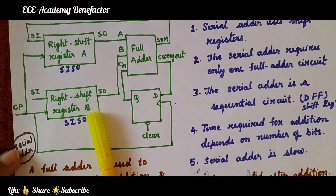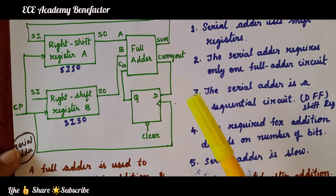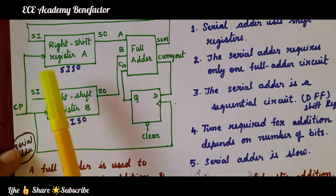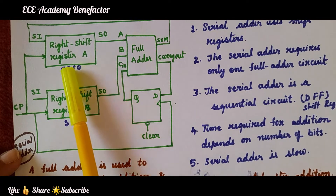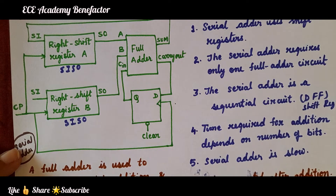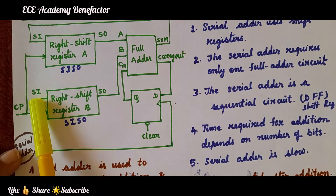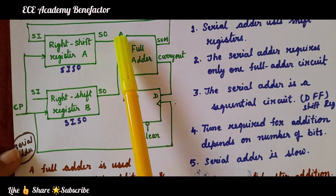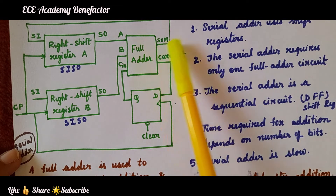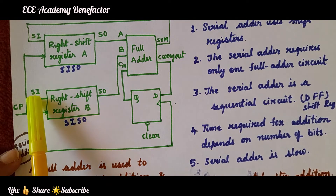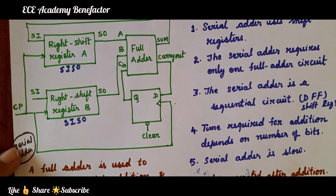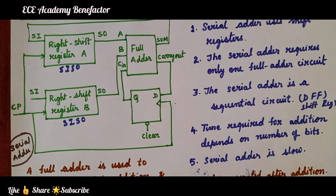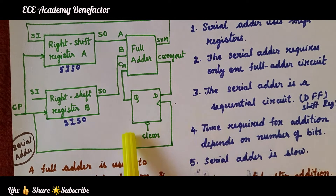After each clock pulse, data within the right shift registers are shifted right — one bit towards the right at every clock pulse. We then get the next digit and the carry of the previous addition as new inputs for the full adder. By loading the number in right shift register B and adding with the content of register A, serial addition is performed bit by bit.